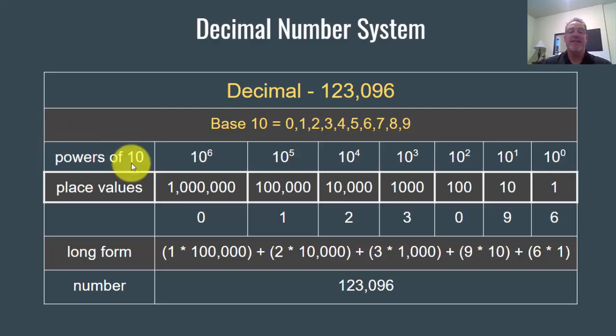The decimal number system is base 10, it's based on powers of 10, and there's also 10 characters or 10 numerals: 0, 1, 2, 3, 4, 5, 6, 7, 8, 9.